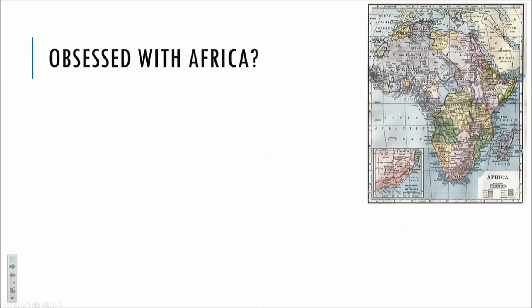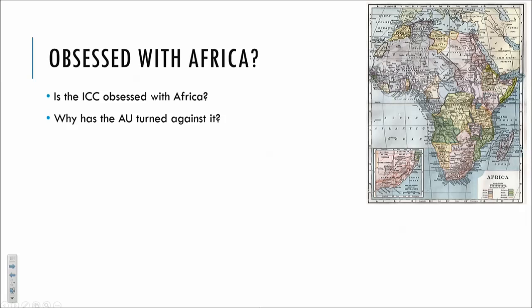A large criticism of the court has been that it appears obsessed with Africa, and over time the African Union appears to have taken a stronger line against the ICC. There are a number of answers to this. First, there is actually a diversity of views amongst states within Africa as to the role of the ICC — and even within states, there is often a diversity of opinions. For example, in South Africa, the judiciary appears to strongly support the ICC while politicians are perhaps more doubtful. But as we've seen, the bulk of cases have come to the court not through prosecutor-initiated investigations but through self-referral by African states, or referrals by the Security Council of African situations. So to some extent the focus of the court has not been entirely the court's fault.